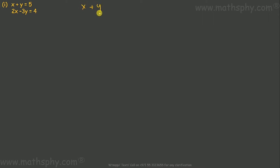The first one: x plus y equals to 5 and 2x minus 3y equals to 4. As the name suggests, elimination method means we have to eliminate either x or y from this equation. To do that, we can subtract one equation from the other. Let's try to subtract this equation from this equation.